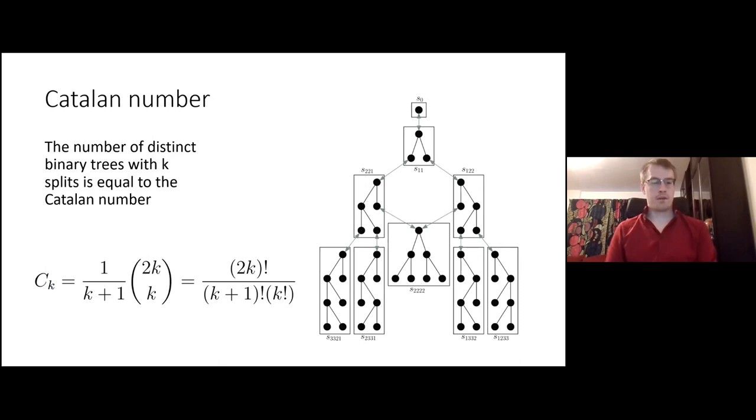The number of distinct binary trees with k splits is equal to the Catalan number. I use this image from my supervisor's paper. We see that for the first one, with zero splits, there's one example of such a regular paving. With one split, there's also one example. You can only do one way. If you do two splits, there's two examples. For three splits, it's five. And if you continue, you will continue to follow this pattern of the Catalan number. So it would be 14 and 42 and so on.